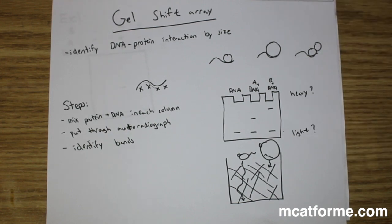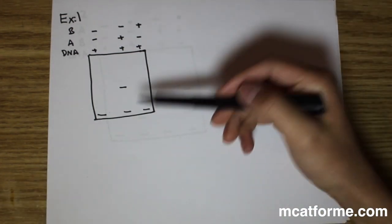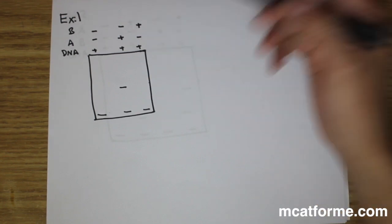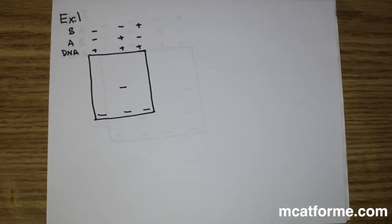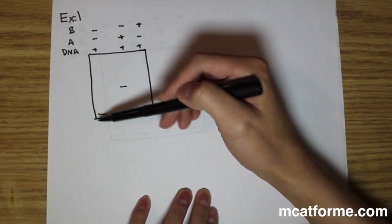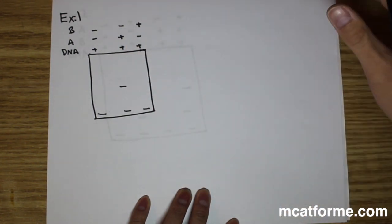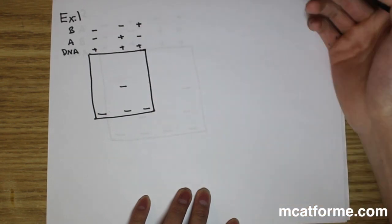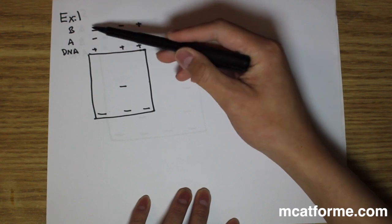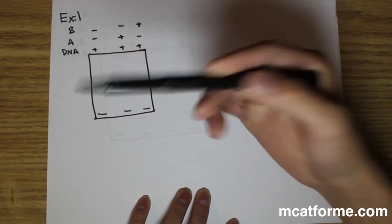Now we'll look at what all these bands mean with three examples that get progressively harder. If we can identify what each band is and what's going on in the situation, we can answer any MCAT question. In example one, we have DNA in every column. In the first column there's no protein A and no protein B. In the second column there's protein A but no protein B. In the third column there's protein B but no protein A.